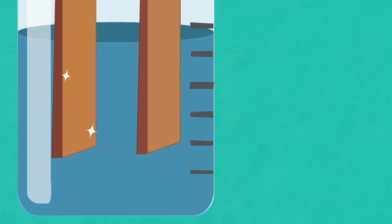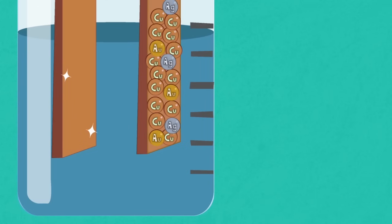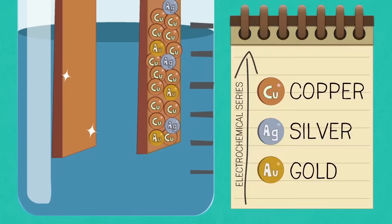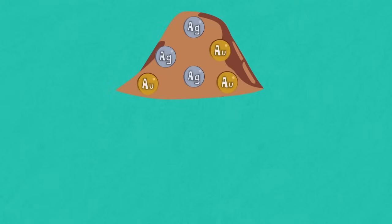Any metal you find in the impure anode which is below copper in the electrochemical series doesn't go into solution as ions. It stays as a metal and falls to the bottom of the cell as an anode sludge together with any unreactive material left over from the ore. Now the anode sludge may contain valuable metals such as silver and gold.